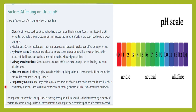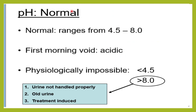Respiratory function also matters — the lungs play a very important role in maintaining acid-base balance. Any condition affecting the lungs, like tuberculosis or chronic obstructive pulmonary disease (COPD), can affect the pH of the urine. The normal range of urine pH is from 4.5 or 5 to 8.